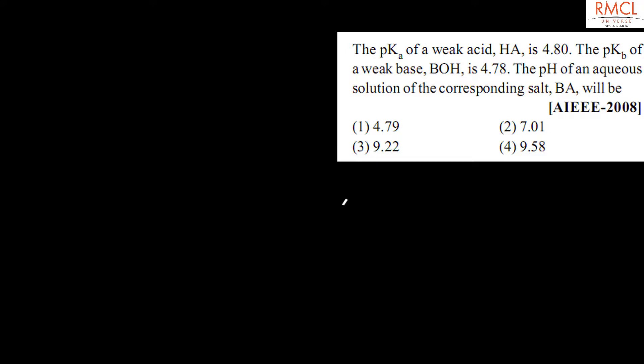So pKa is equal to 4.8 and pKb is equal to 4.78. Now the value of pH is equal to 7 plus 1/2 times (pKa minus pKb). This equals 7 plus 1/2 times...